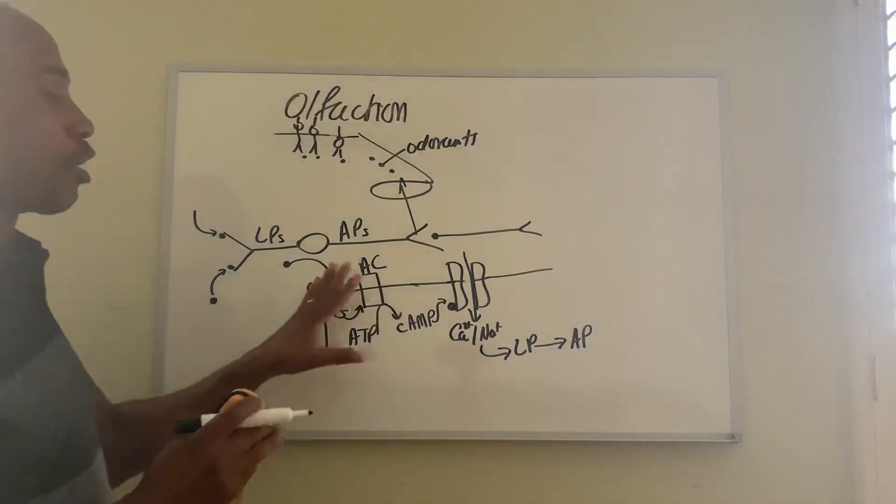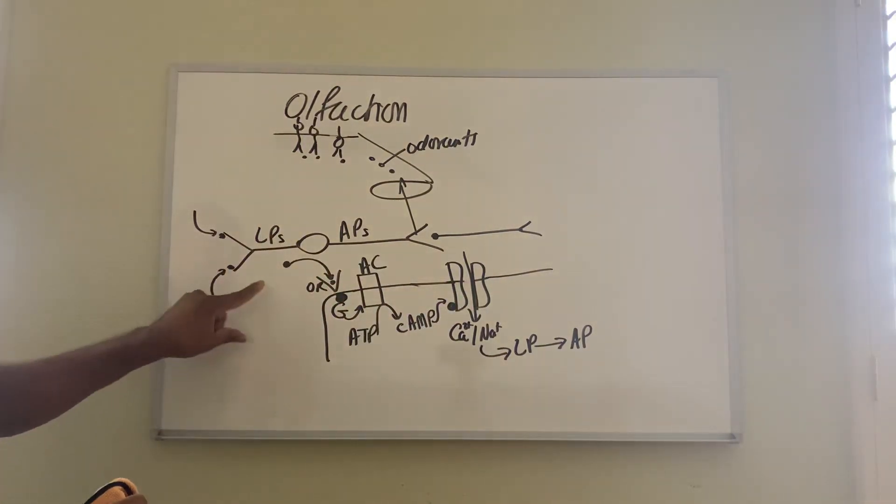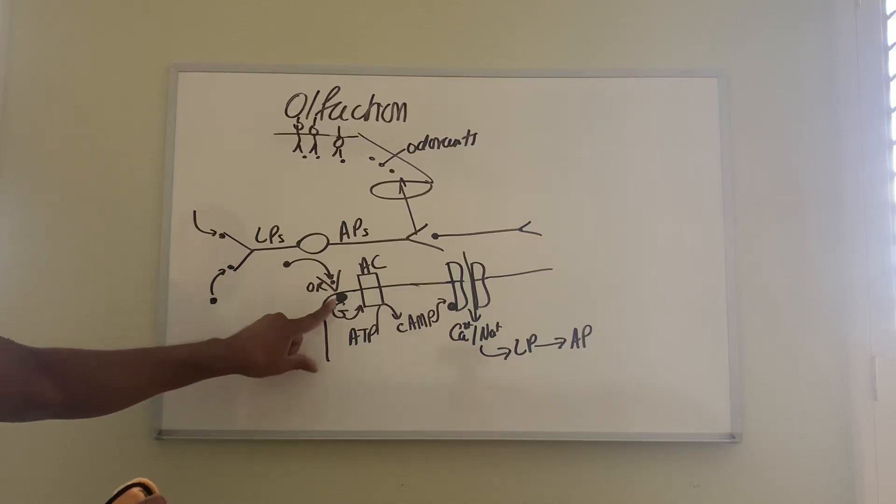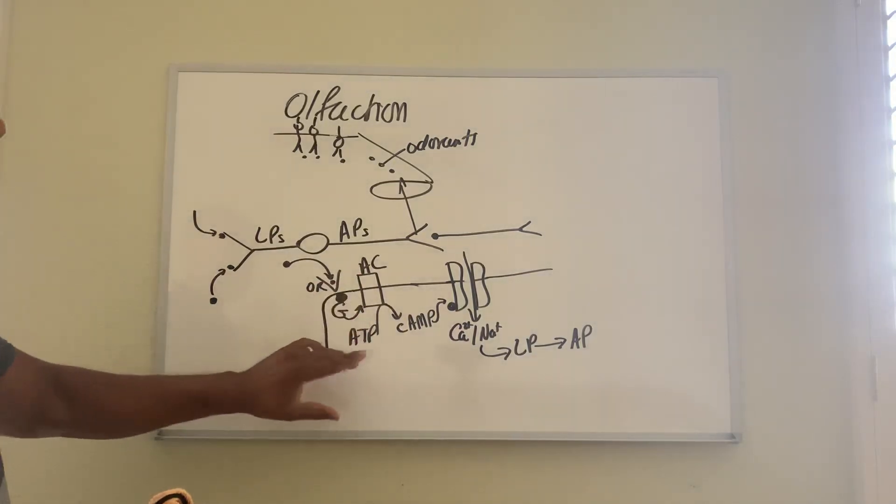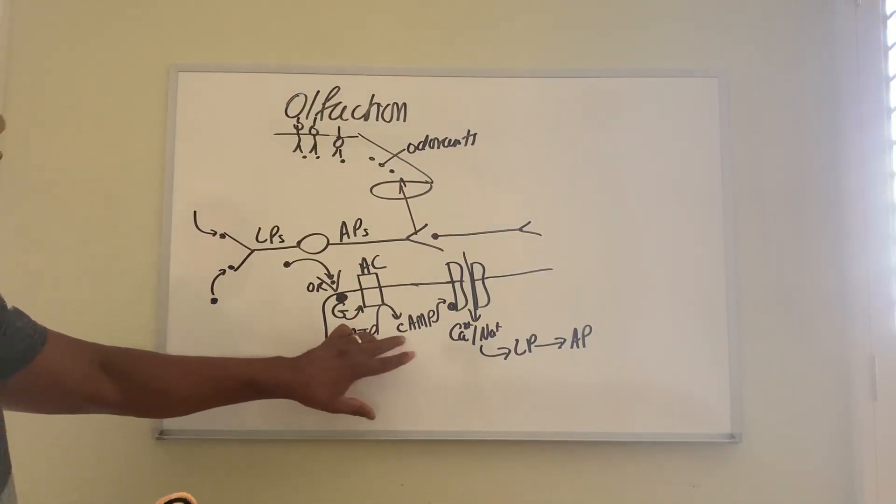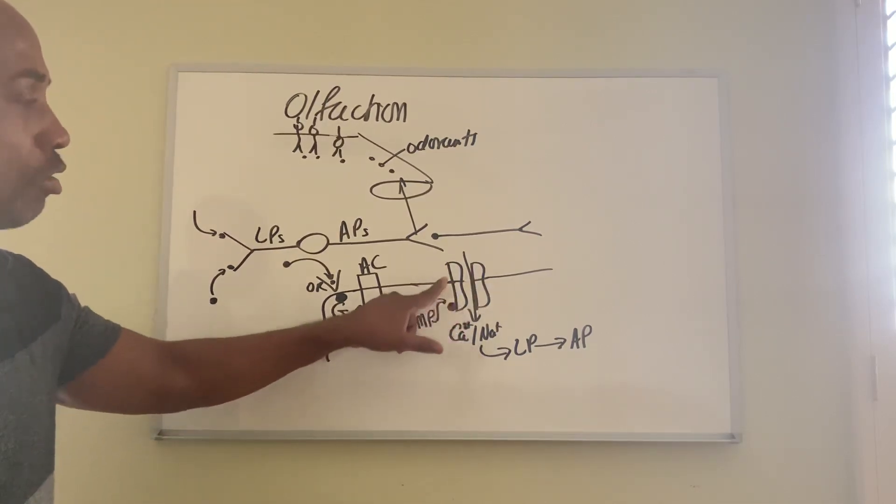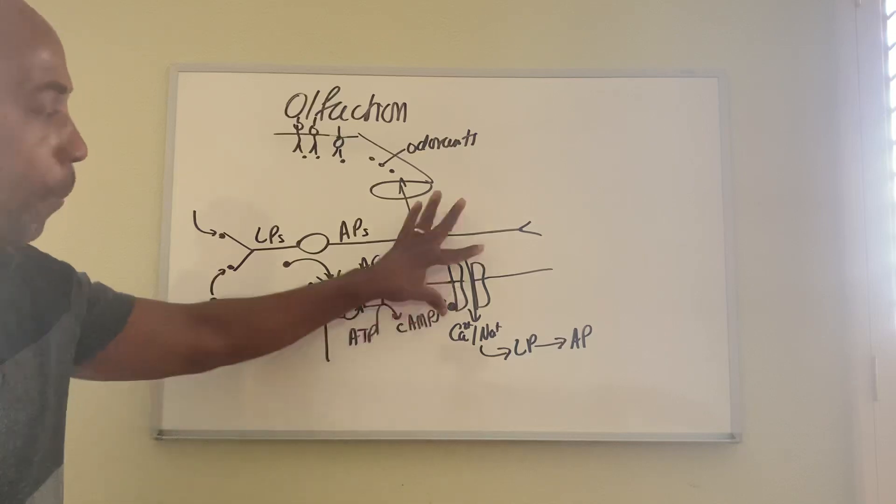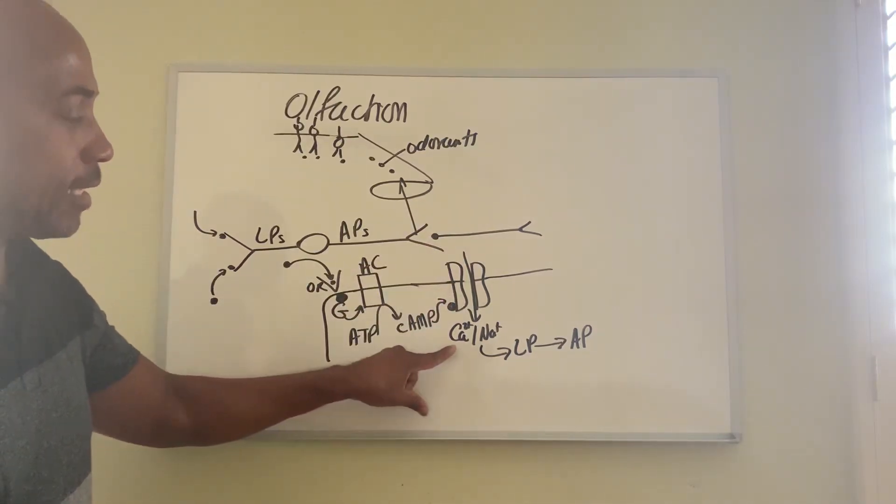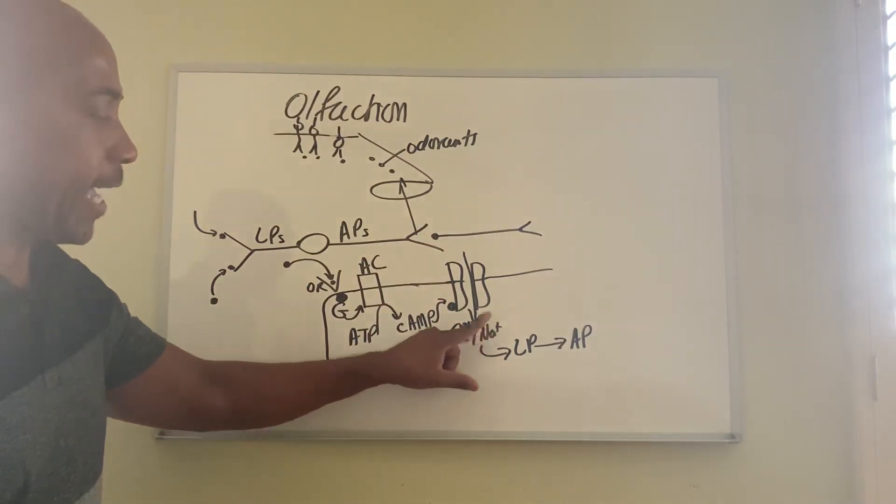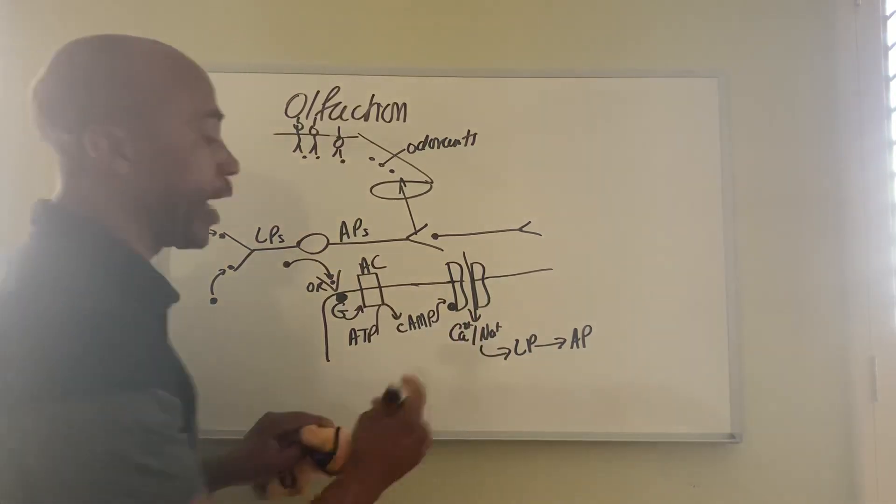That will eventually create the action potential that would then trigger the message in that first order neuron. So that is the cellular mechanism of how an odorant binds to receptor, receptor activates G-protein which in turn activates an enzyme called adenylate cyclase, which converts ATP to cyclic AMP. Then cyclic AMP will bind to a ligand gated channel on the membrane to open it to let in calcium and sodium. And then the entry of these ions creates a local potential.